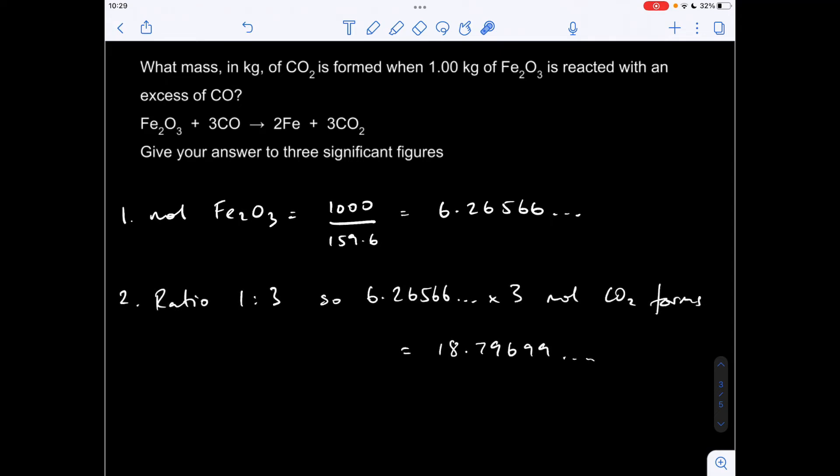So the ratio between iron oxide and carbon dioxide is one to three. So if we've got that many moles of iron oxide, we're going to get three times as many moles of CO2, which comes out of that number there. The mass of CO2, moles times MR, so it's that many grams. But the question wanted the answer in kilograms. So we divide by 1,000, to three significant figures, it's 0.827 kilograms.